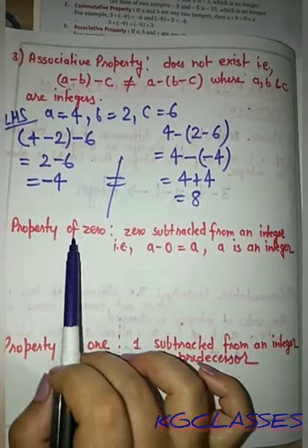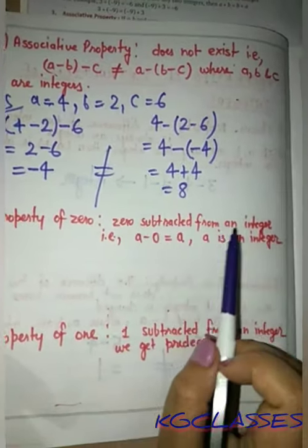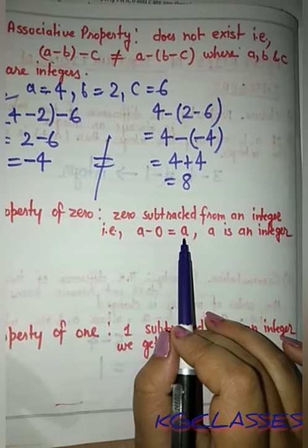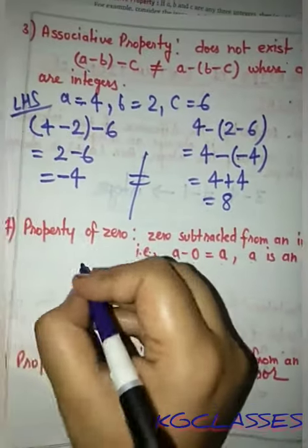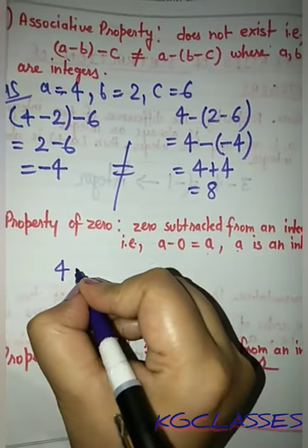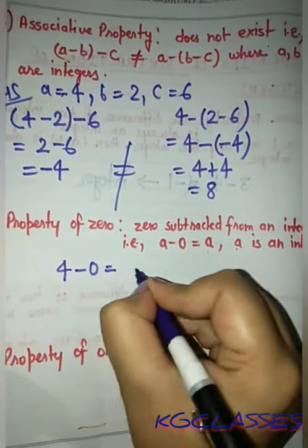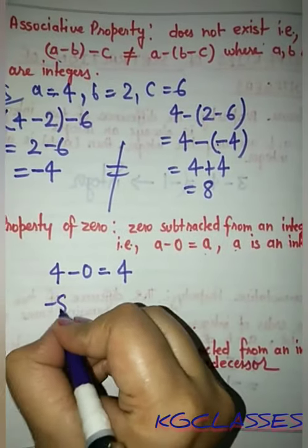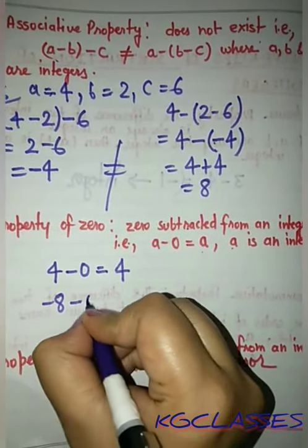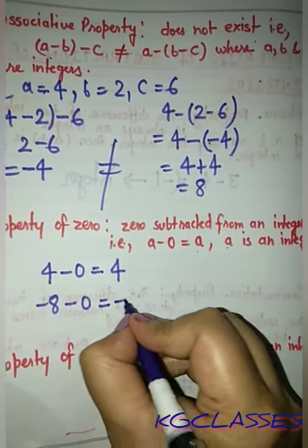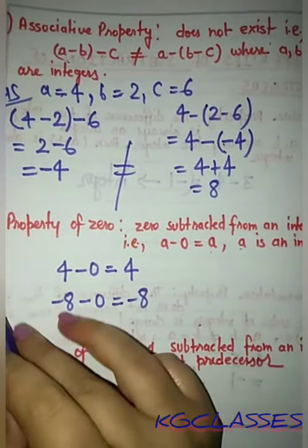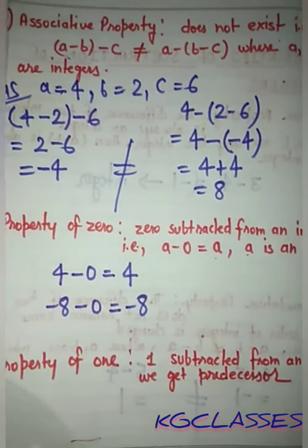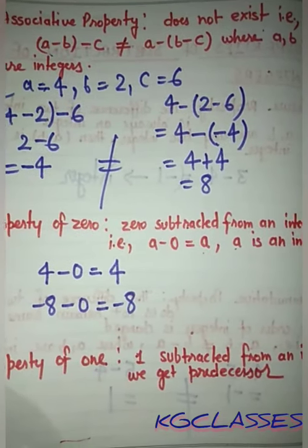The next property is the property of zero. If zero is subtracted from an integer, we get the integer itself: a minus 0 equals a. For example, if we have 4 and subtract 0, we get 4. If we have minus 8 and subtract 0, we get minus 8. So this is the property of zero.